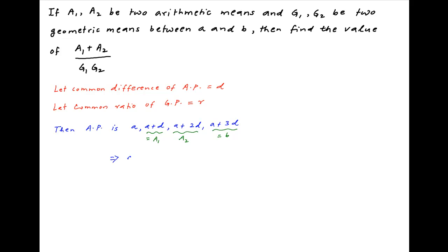Since the last term a plus 3d is equal to b, solving for d we get d is equal to b minus a upon 3. Therefore, the first arithmetic mean a1 is equal to a plus d, which equals a plus (b minus a) upon 3, which simplifies to 2a plus b upon 3.